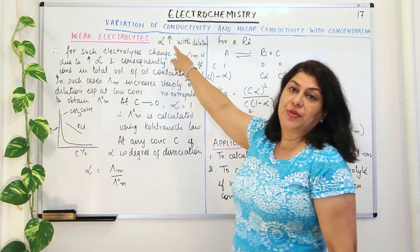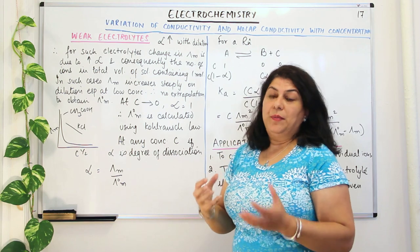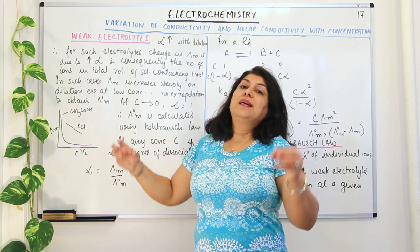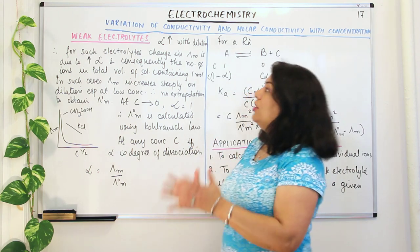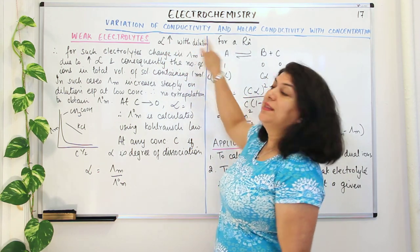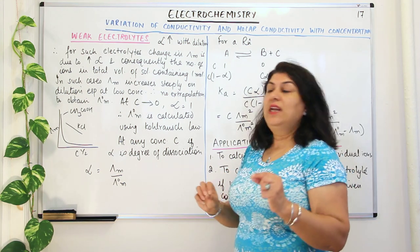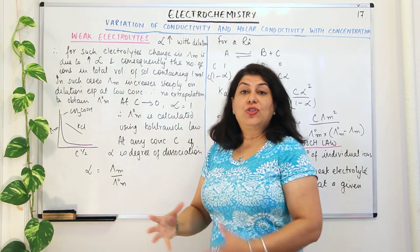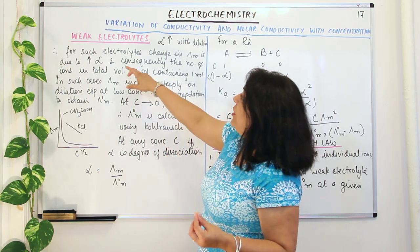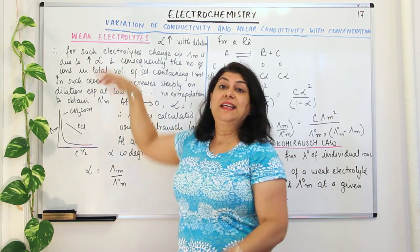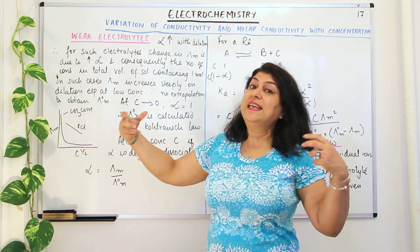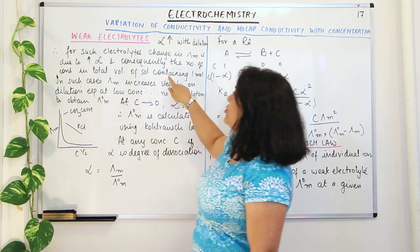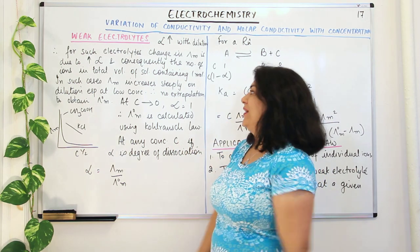The degree of dissociation, represented by alpha, increases with dilution because as you keep diluting, the weak electrolyte ionizes but due to the distance between the ions, they do not associate back. Therefore for such electrolytes, the change in molar conductivity lambda M is due to the increase in the degree of dissociation. The number of ions in the solution is increasing and therefore conductivity is increasing. Consequently, the number of ions in the total volume of the solution containing one mole is increasing and that affects the conductivity.